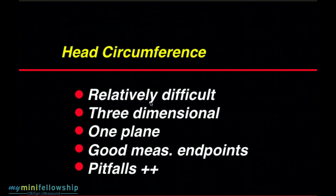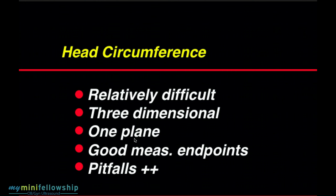By contrast, the head circumference is a relatively difficult measurement. Why? Because it must be correct in three dimensions. Two of the dimensions are the same as the biparietal diameter, so you have to reach the appropriate level of the skull, and secondly, you cannot incline the beam through the skull. But thirdly, in the case of the head circumference, the plane of section must be exactly parallel to Reid's baseline, which means that in effect there is only one plane that is exactly perfect for measuring the head circumference. By comparison to the biparietal diameter, where we have a great deal more latitude for getting the correct measurement, with the head circumference we have a great deal less latitude.